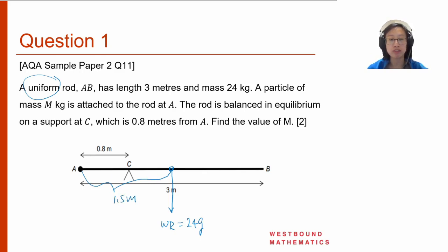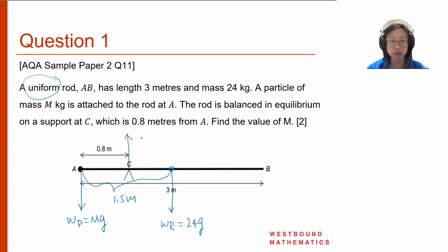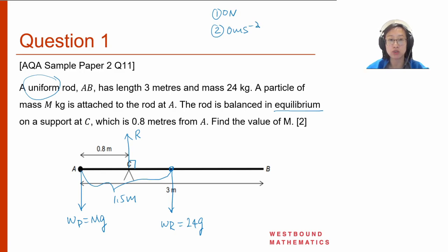A particle of mass m is attached at A, so here I have the weight of the particle equal to mg. The rod is balanced on a support at C, and by Newton's third law there is a normal reaction R, perpendicular to the contact surface. Because this rod is in equilibrium, there is zero net force in any direction, zero acceleration — the rod is stationary — and zero net moment either clockwise or anticlockwise, meaning all three forces collectively have zero turning effect on the rod.